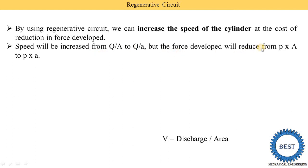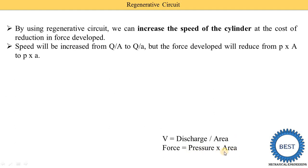When we increase the speed, the force developed will be reduced — from P into capital A (for a simple system) to P into small a (for the regenerative system). Force equals pressure times area. To increase force, either we increase the pressure or increase the area. But in a regenerative circuit we increase speed by reducing the area, so when the area is reduced the force is also reduced.